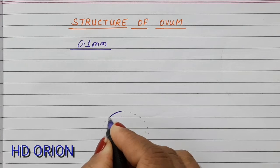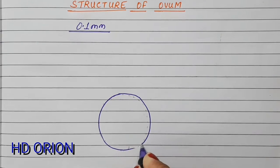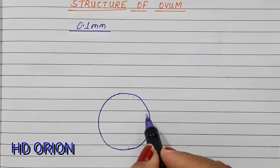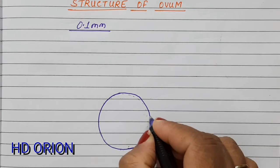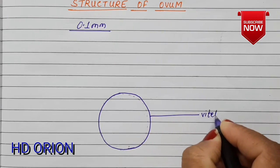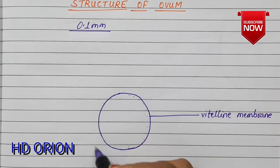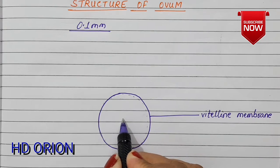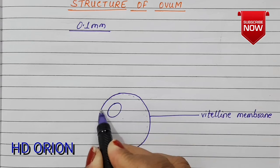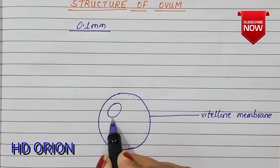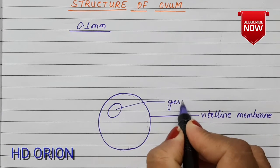Now let us see the structure of the human egg. It is similar to other kinds of cells — just the terms differ. The outer membrane is called the vitelline membrane, which is secreted by the cell itself. The nucleus is usually at the center but later shifts to the sides, and this position is called the eccentric position.